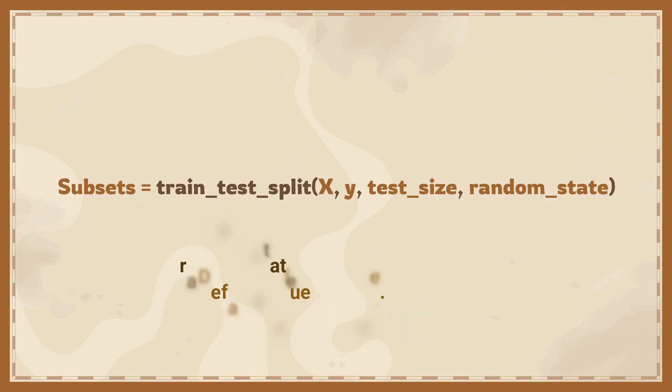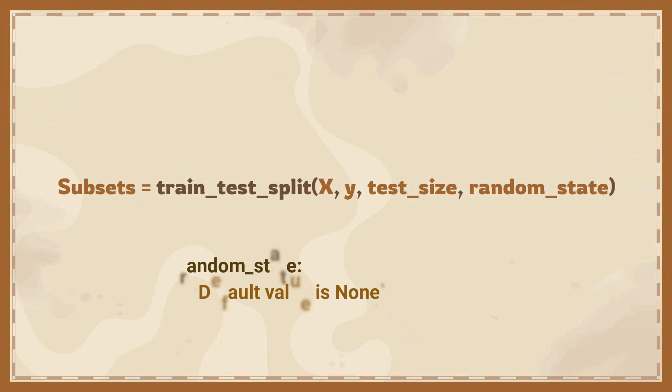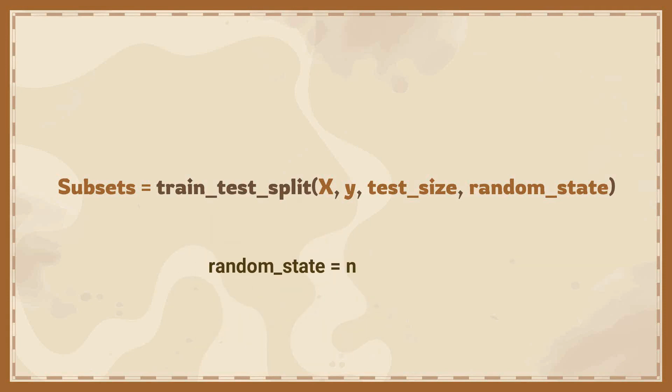For the random_state parameter, the default value is None. With the default None value, we can get different test and train samples across different executions — meaning the shuffling process is out of control. If we specify explicitly the value of random_state, then we can get the same samples in both training as well as testing subsets across different executions.